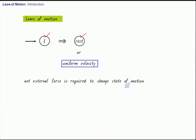For example, if a body is moving with uniform velocity, it will continue to do so unless an external force is applied. The first law of motion essentially tells us that a net external force is required to change the state of motion.